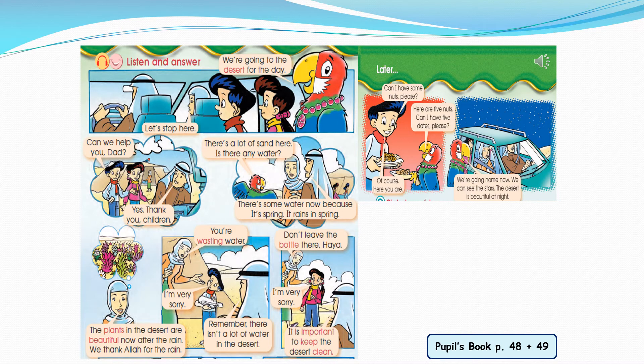We're going to the desert for the day. Let's stop here. Can we help you, Dad? Yes, thank you, children. There's a lot of sand here. Is there any water? There's some water now because it's spring. It rains in spring.